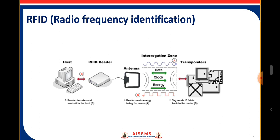An RFID tag contains an integrated circuit and antenna which are used to transmit data to the RFID reader, also called an interrogator. The reader converts the radio waves to a more usable form of data. The information collected from the tags is then transferred through a communication interface to a host computer system, where the data can be stored in a database and analyzed at a later time.